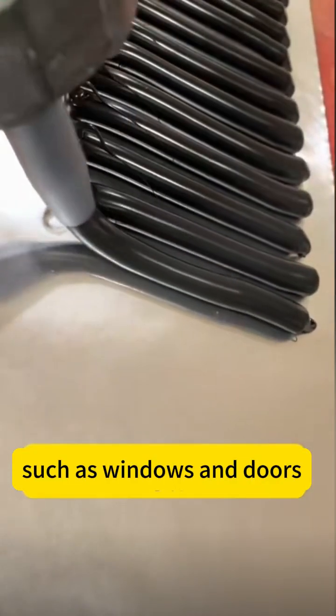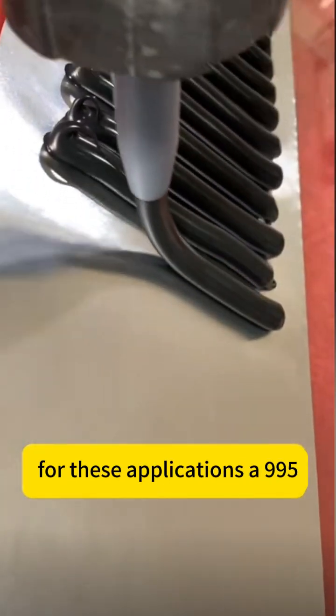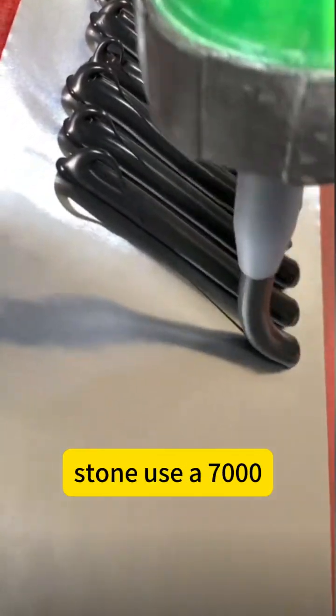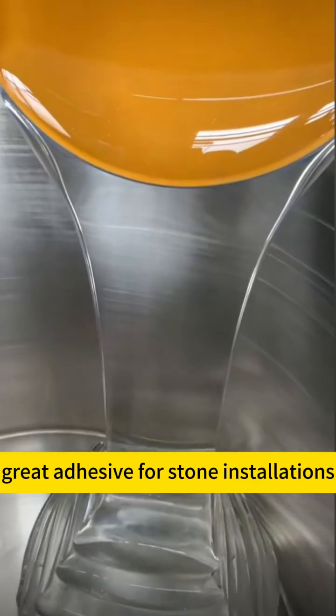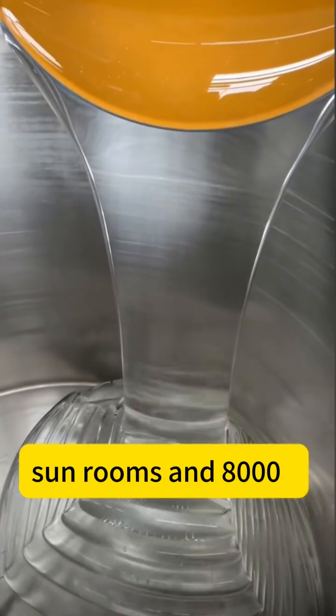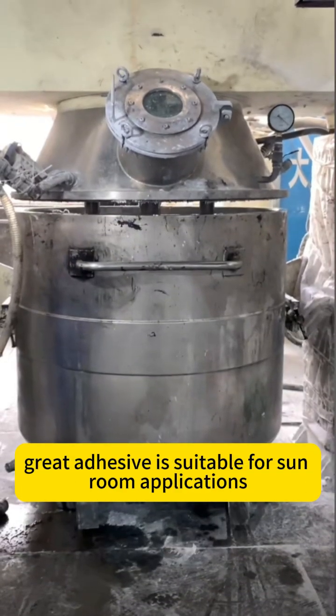For windows and doors, a 995-grade adhesive is appropriate. For stone installations, use a 7000-grade adhesive. For sunrooms, an 8000-grade adhesive is suitable.